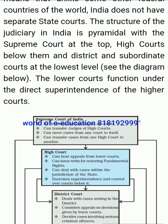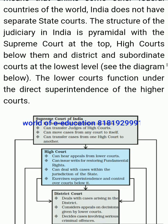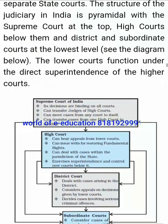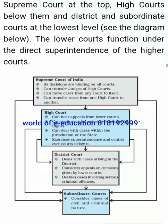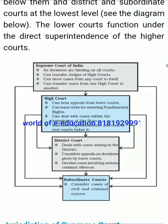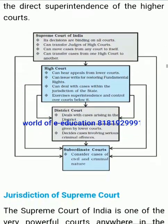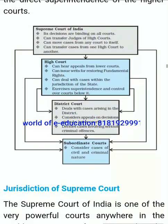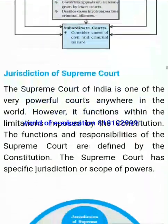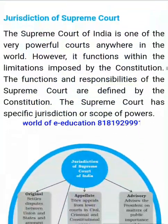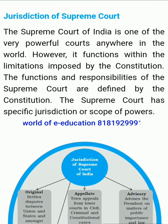Structure of the Judiciary. The Constitution of India provides for a single integrated judicial system. Unlike some other federal countries of the world, India does not have separate state courts. The structure of the judiciary in India is pyramidal, with the Supreme Court at the top, high courts below them, and district and subordinate courts at the lowest level. The lower courts function under the direct superintendence of the higher courts.